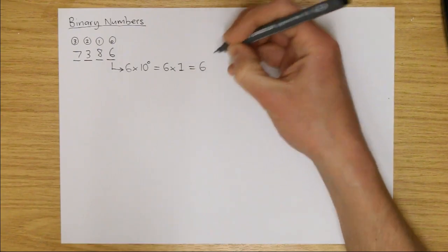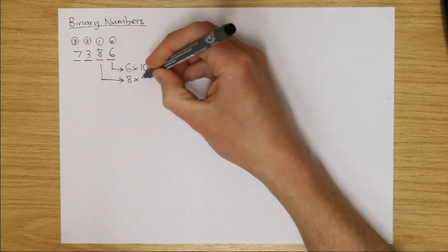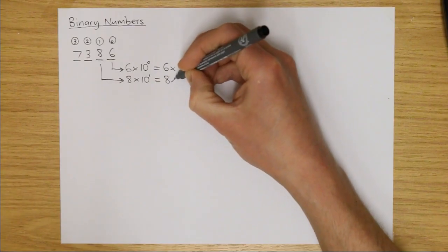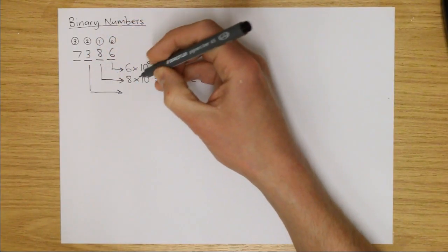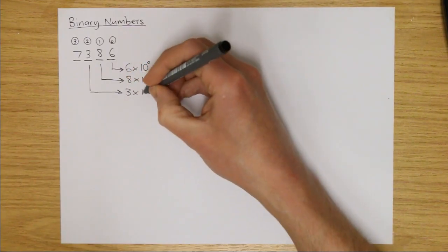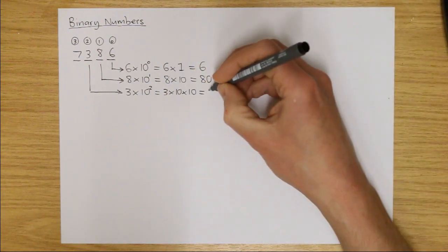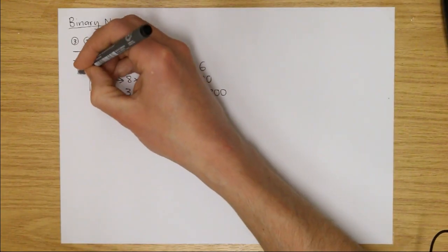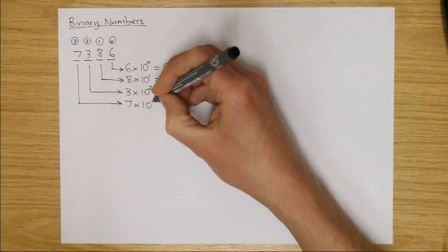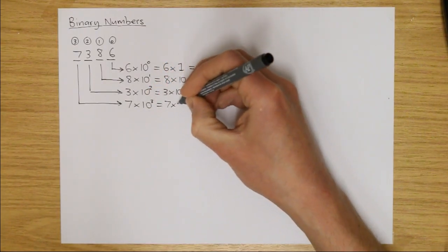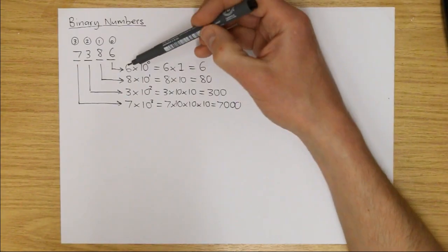The next digit is digit one — in this case it's an eight — so this represents eight times 10 to the power of one, which is 80. The next digit, digit two, is a three and it represents three times 10 to the power of two, so that's three times 100, which is 300. Our final digit, digit three, happens to be a seven and it represents seven times 10 to the power of three, which is 7000.